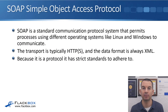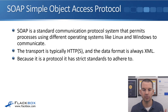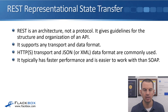The first API we'll look at is SOAP, which stands for Simple Object Access Protocol. It's a standard communication protocol that permits processes using different operating systems like Linux and Windows to communicate. The transport is typically HTTP or HTTPS. The data format is always XML. SOAP is a protocol, so it specifies exactly how it should work — it has strict standards, and one of those is that the data format must be XML.